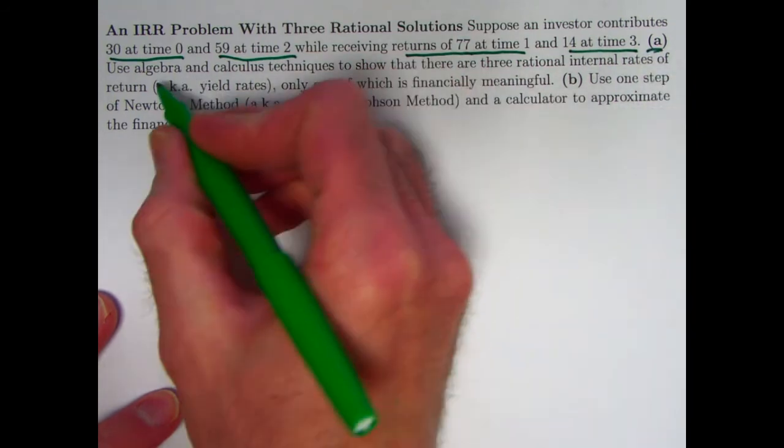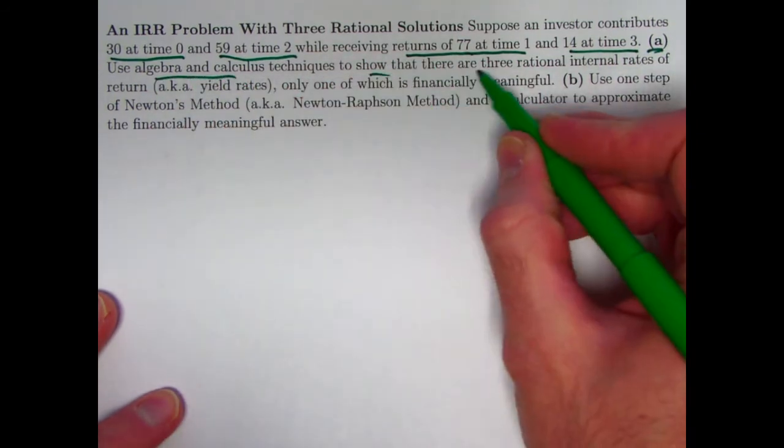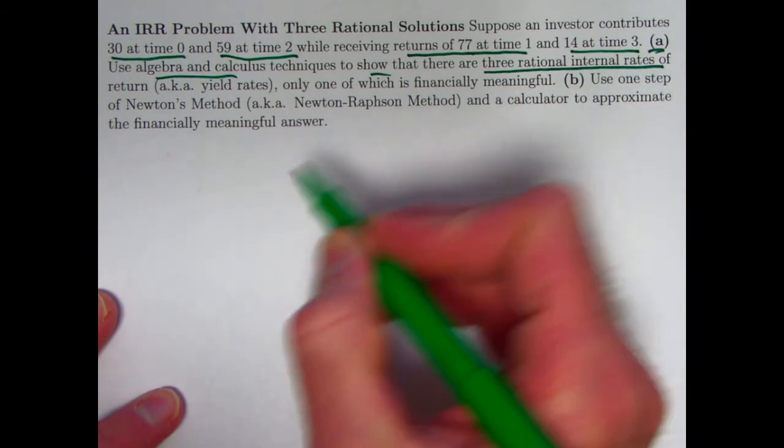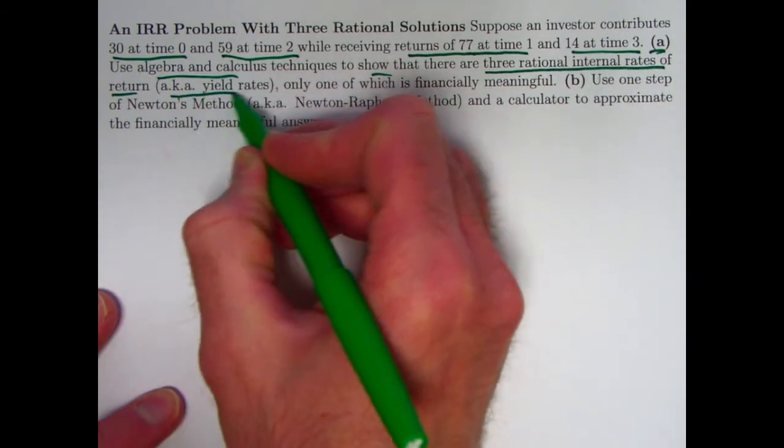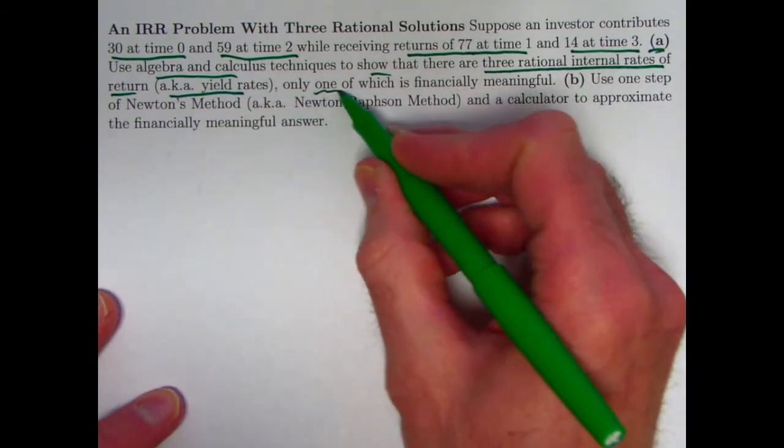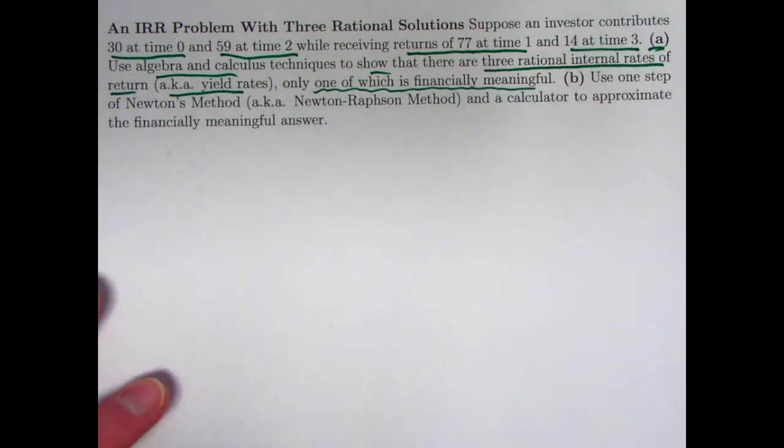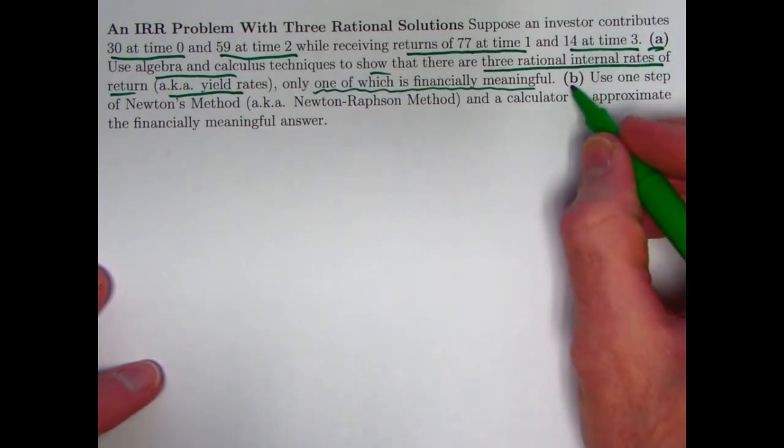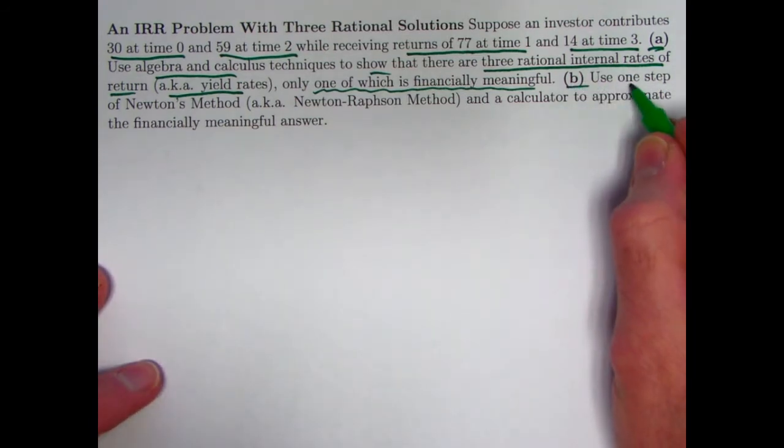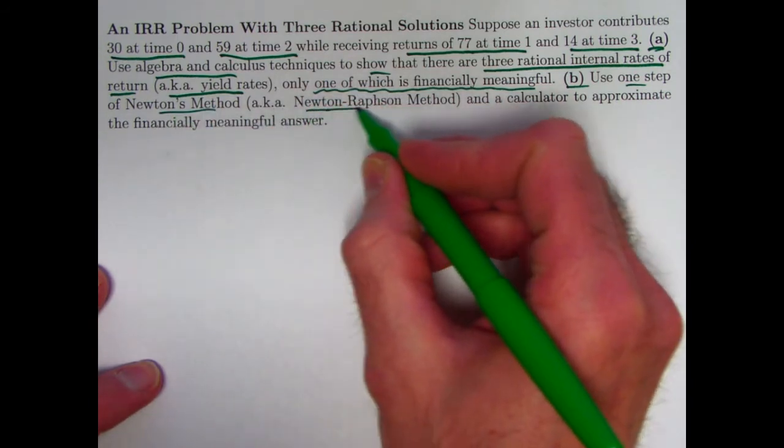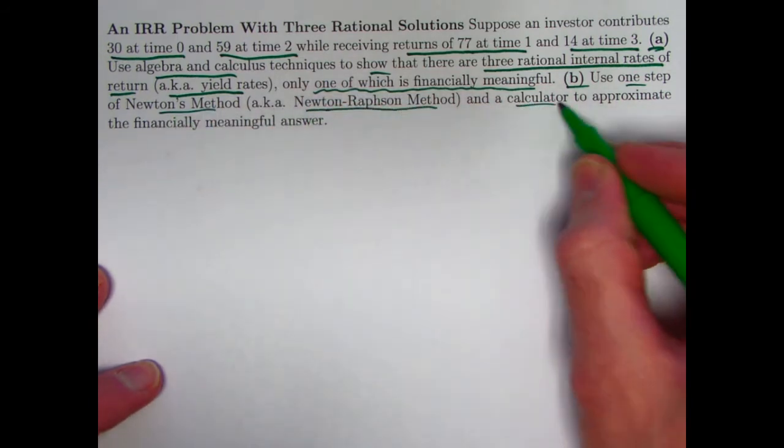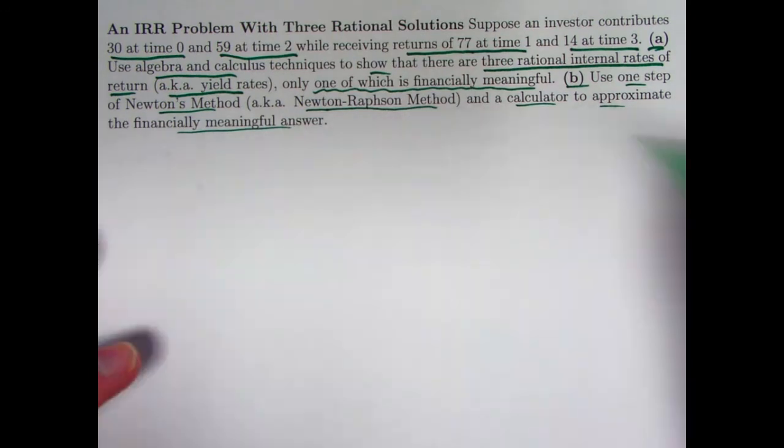In part A, we'll be doing algebra and calculus to show that there are three rational interest rates, internal rates of return, also known as yield rates, only one of which is financially meaningful. It's going to be the one with the positive value of i. The other ones are going to be negative.